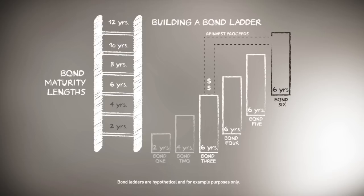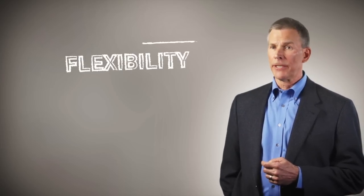By staggering maturities within a bond ladder, you don't get locked into a single maturity date or a single interest rate. As the shortest bond matures, you manage interest rate risk by reinvesting the maturing principle in longer maturities, potentially capturing the long end of the yield curve, which may raise the yield on your overall portfolio. This offers flexibility.